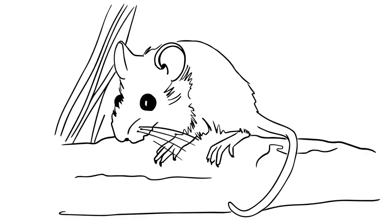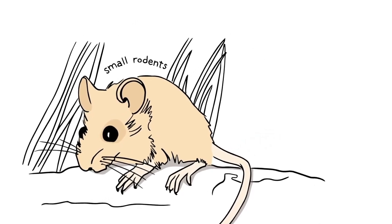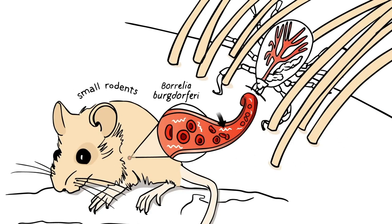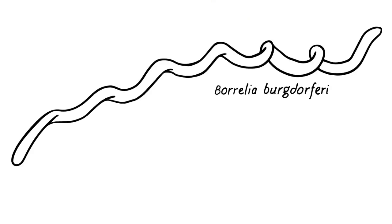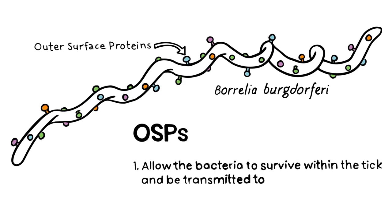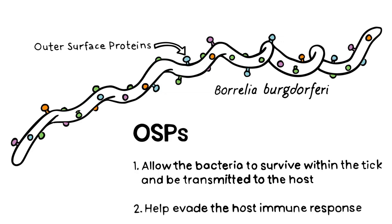Borrelia burgdorferi is carried by small rodent hosts in the environment. When ticks feed on these rodents, bacteria are ingested and take up residence in the midgut of the tick. The Borrelia burgdorferi bacteria express a variety of outer surface proteins, also called OSPs, which allow the bacteria to survive within the tick, to be transmitted to the host, and to evade the host immune response once transmitted.